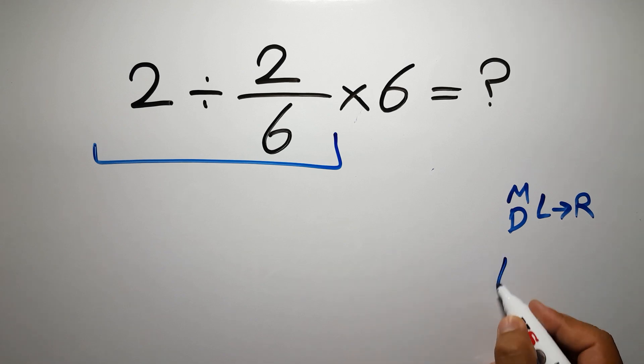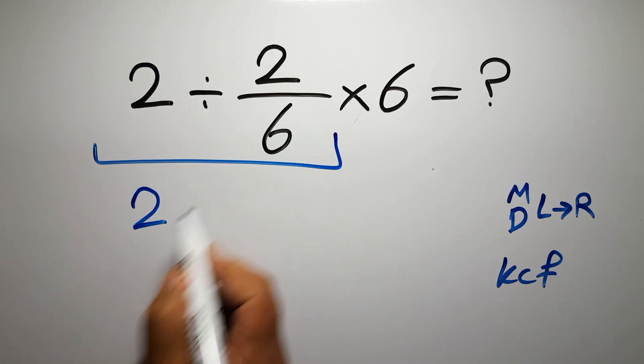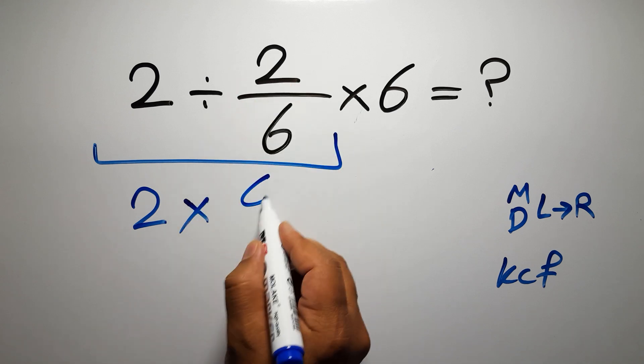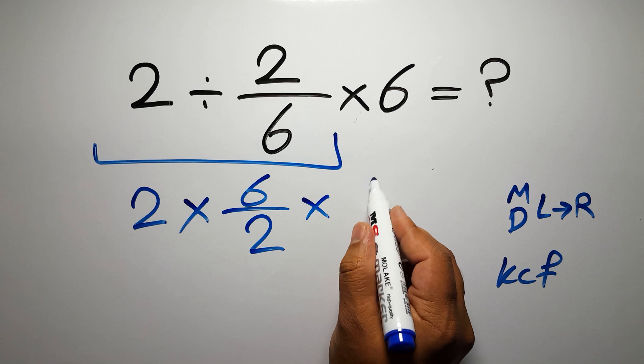According to the KCF rule, K stands for keep, C stands for change, and F stands for flip. We can write: keep the first fraction, change division to multiplication, and flip the second fraction. And here we have times 6.